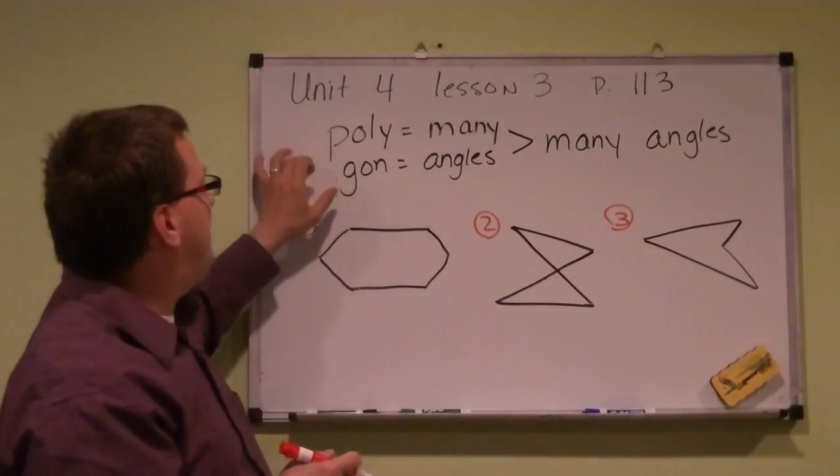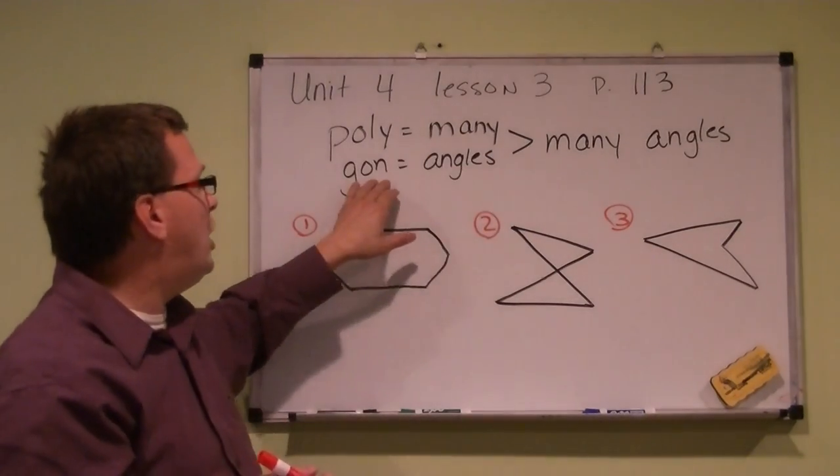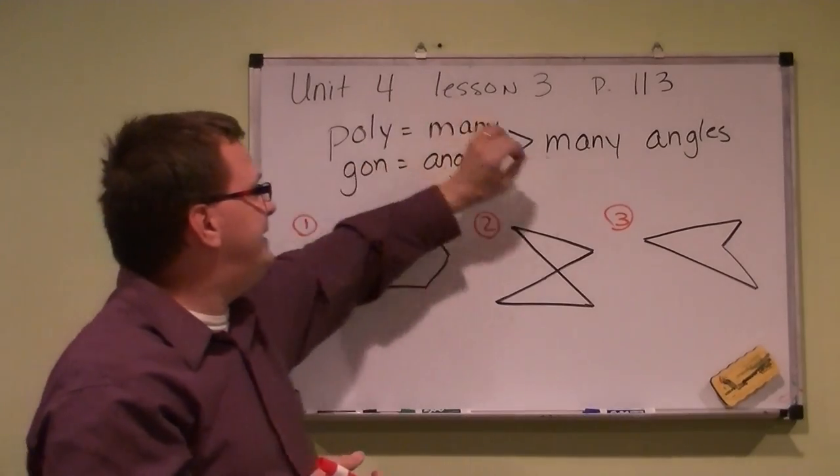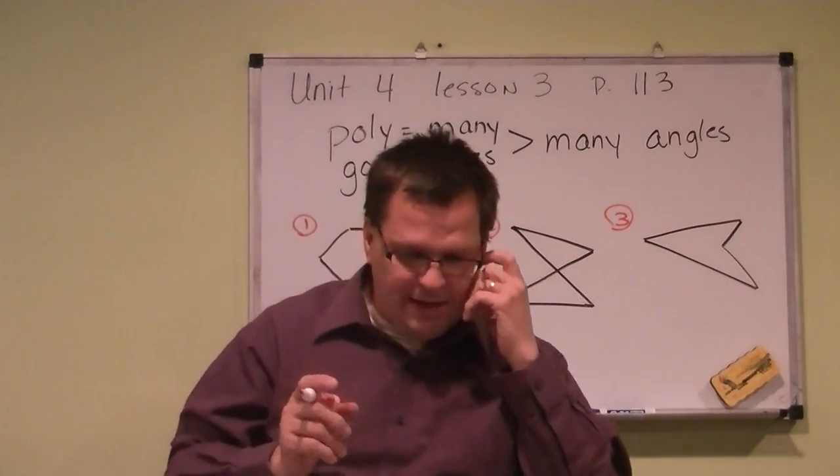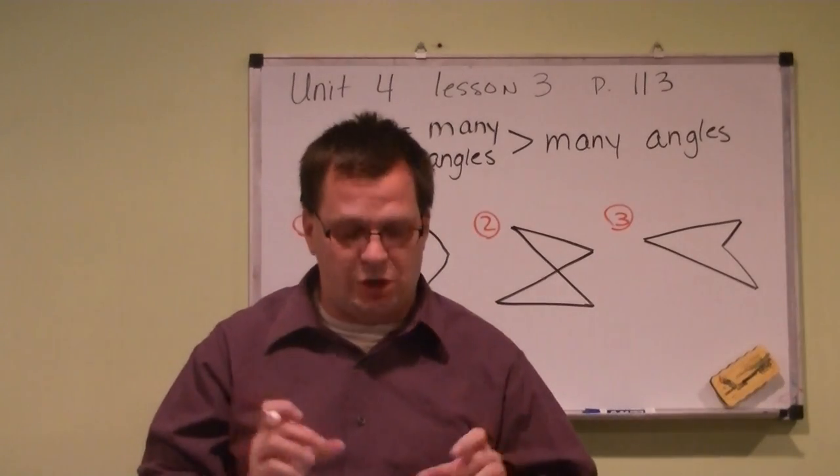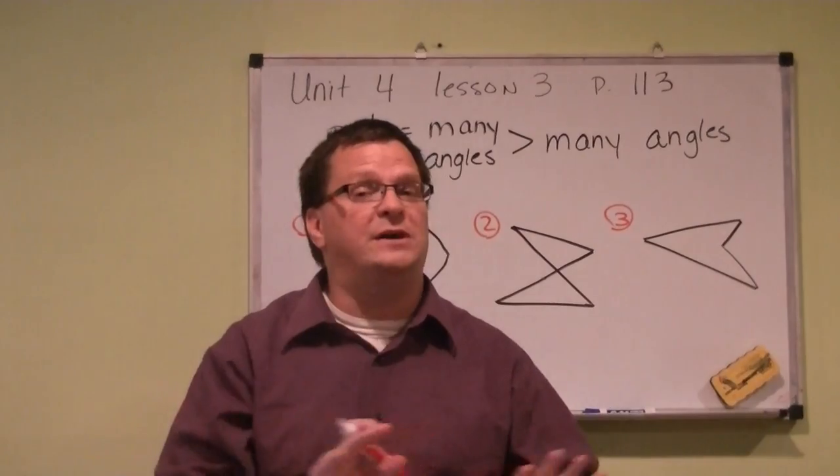So let's first of all think of a polygon. Poly means many, as we've talked about in class, and gon means angles. So really what this all means is many angles. And also a polygon is a flat, closed figure made up of line segments that never cross. They do not cross.